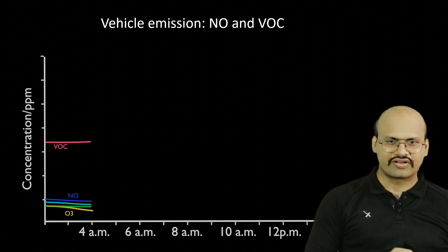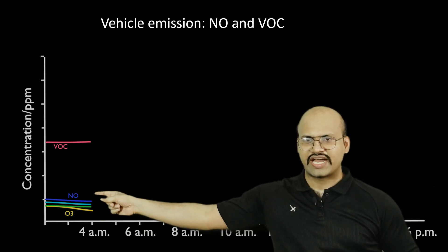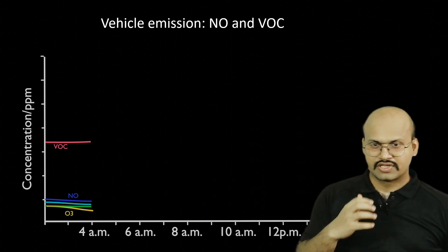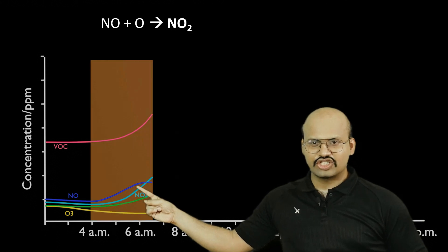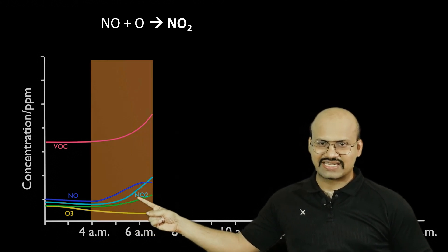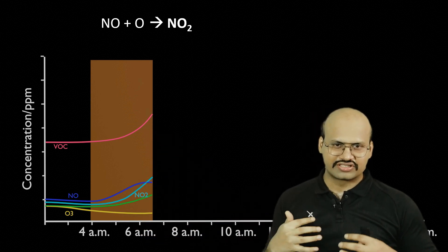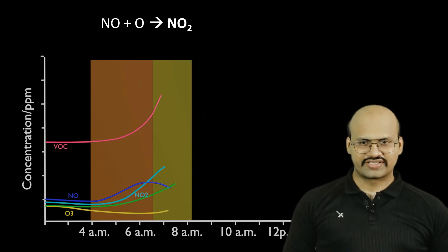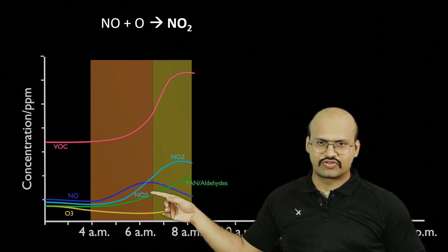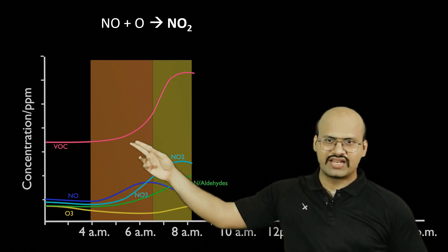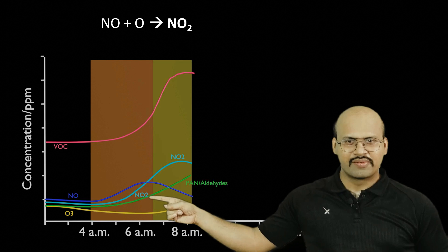Let's see how photochemical smog forms from morning to evening. In the morning the levels of ozone and nitrogen oxide are low and VOC is almost constant. But due to vehicle traffic, the concentration of NO increases. This NO reacts to form NO₂, so we see a slight increase in NO₂, while the level of ozone is almost constant or even decreases slightly. VOC is increasing because vehicles are emitting it. As the day progresses, the reaction between NO and ozone increases, causing a slight dip in ozone while NO₂ is formed. VOC continues to increase. Some secondary pollutants begin to appear but in small amounts.